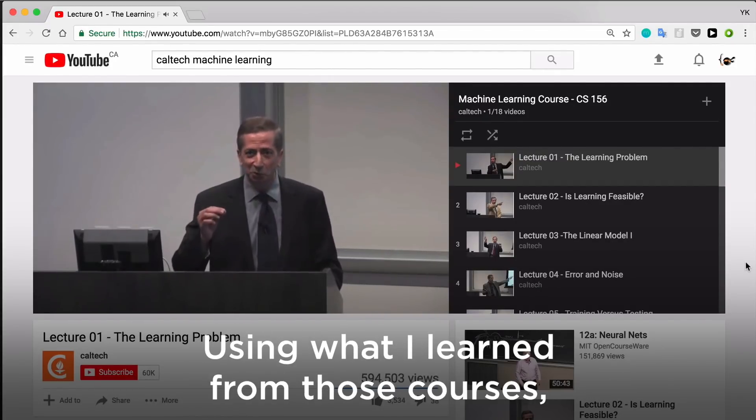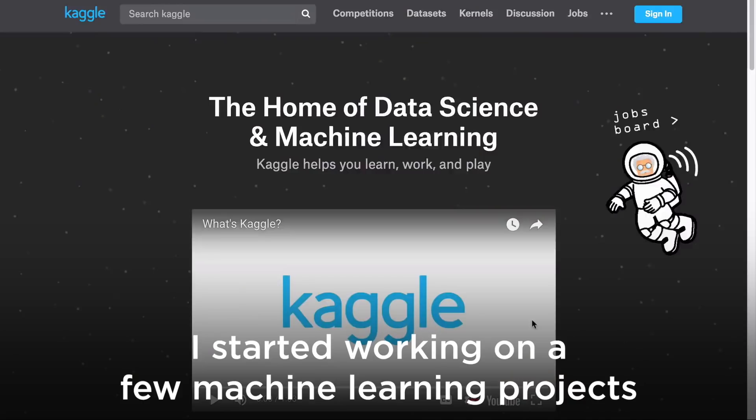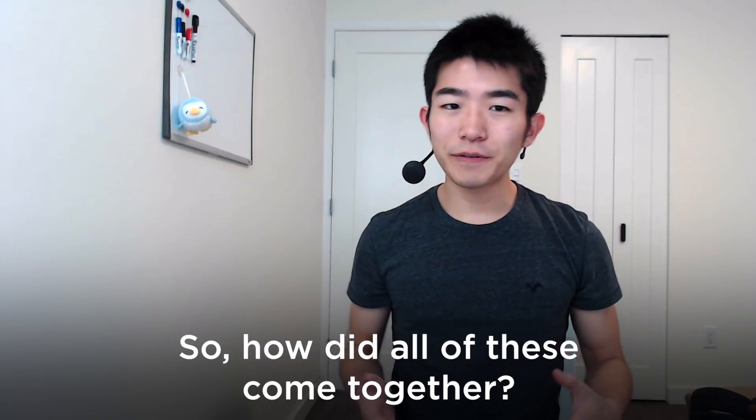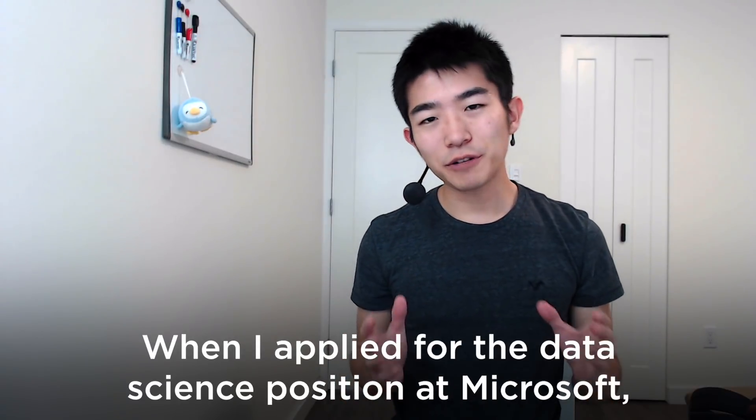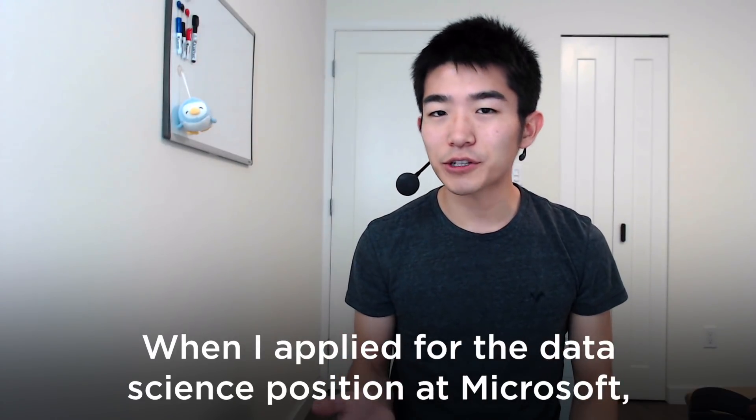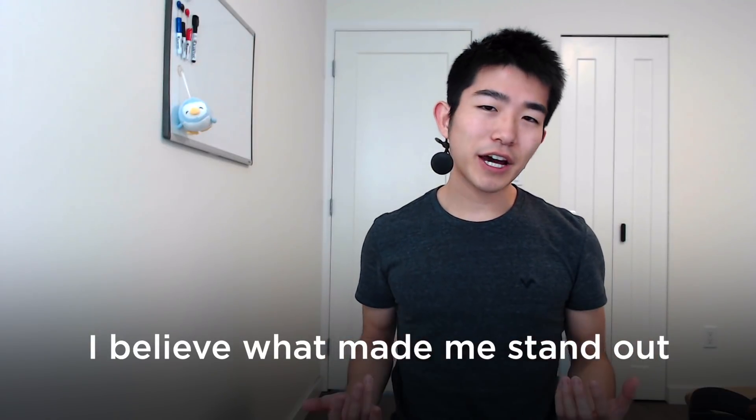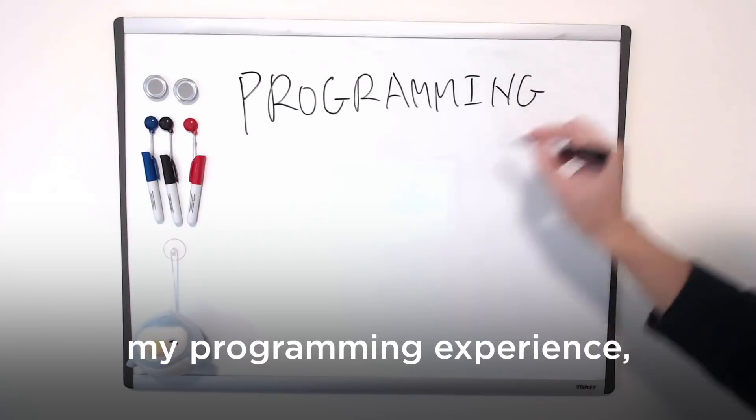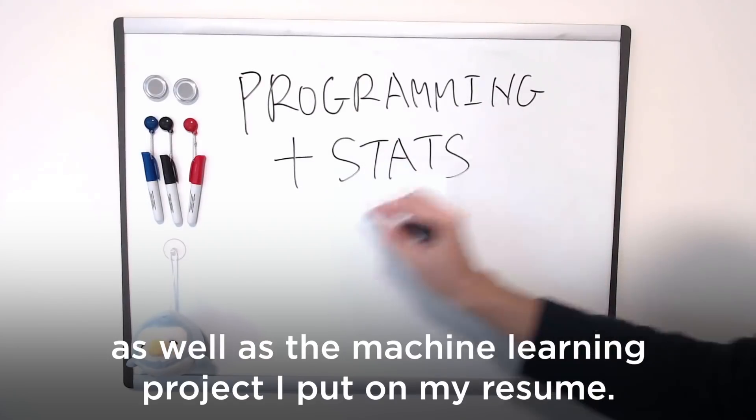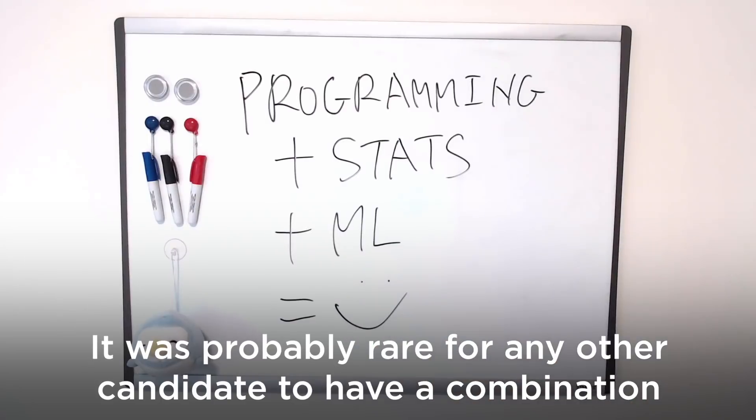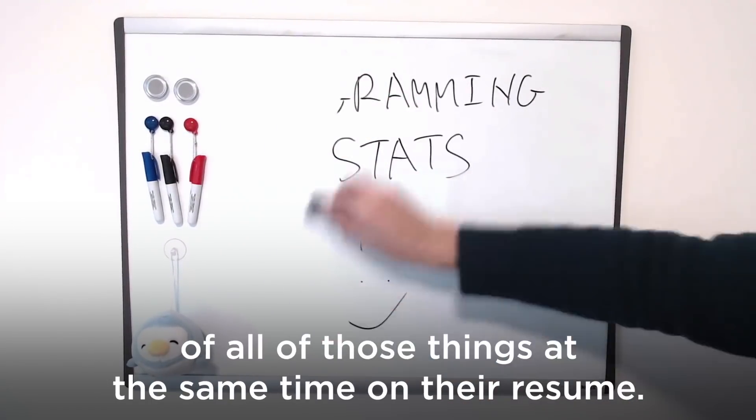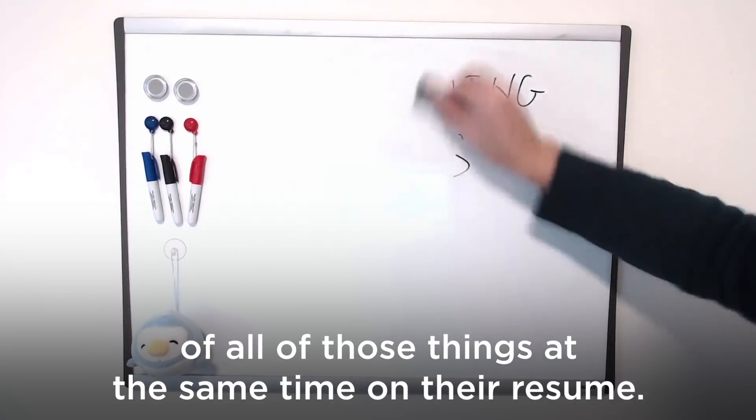Using what I learned from those courses, I started working on a few machine learning projects using a website called Kaggle. So how did all of these come together? When I applied for the data science position at Microsoft, I believe what made me stand out was the combination of my statistics background, my programming experience, as well as the machine learning project I put on my resume. It was probably rare for any other candidate to have a combination of all of those things at the same time on their resume.